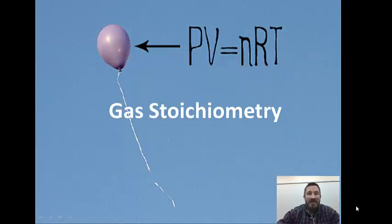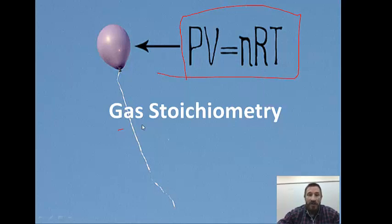Today we're going to learn about gas stoichiometry. So what we're going to do is take this wonderful equation, PV equals nRT, and we're going to use that equation to do some great gas stoichiometry. Let's start.